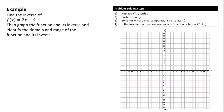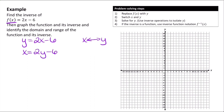Let's find the inverse of f(x) = 2x − 6, then graph the function and its inverse and identify the domain and range of both. We start by replacing f(x) with y, so we have y = 2x − 6. Now we switch x and y. Then we need to solve for y using inverse operations to get y by itself.